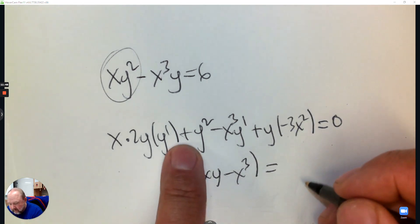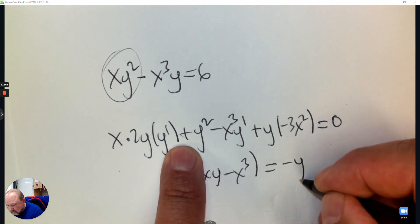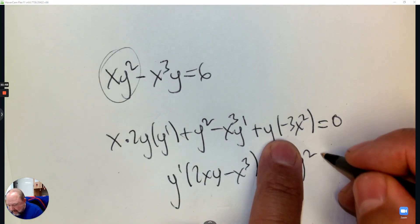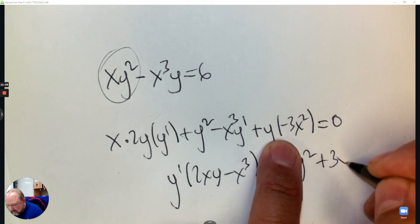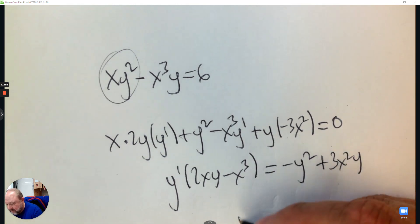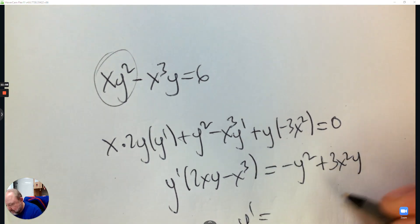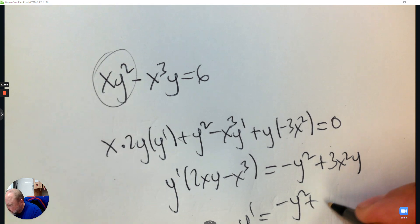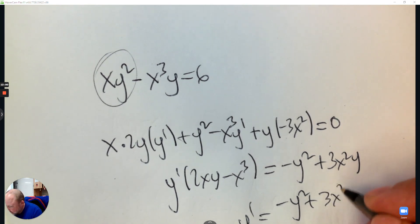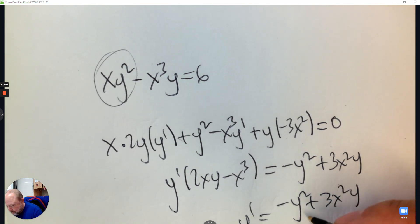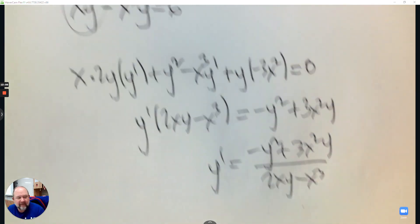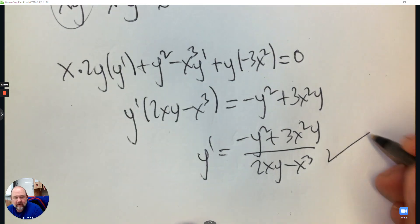Then subtract y squared and add 3x squared y, then divide — and that's exactly what the derivative equals.